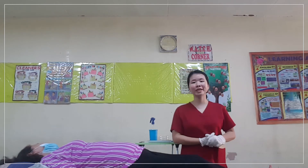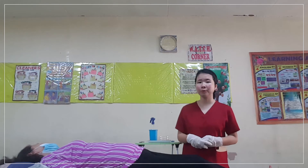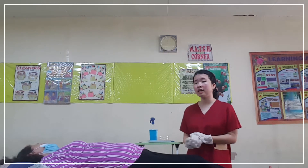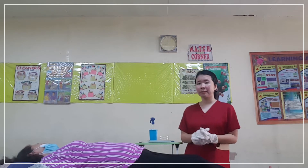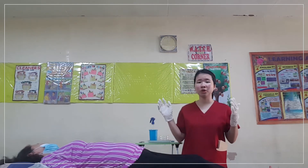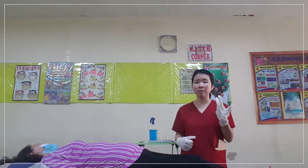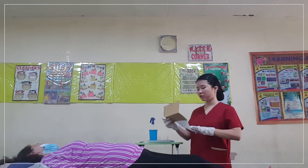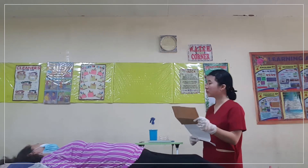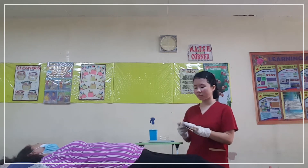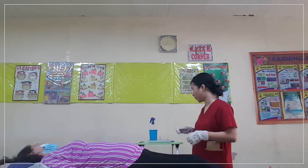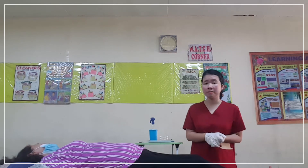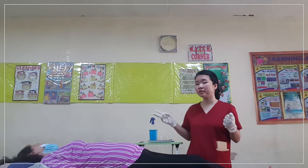We are now going to proceed to procedure number nine, which is to provide privacy for the patient to reduce anxiety and promote safety, security, and dignity of our client. Then we proceed to procedure number ten, which is to verify that you are administering the medication at the proper time, in the prescribed dose, and by the correct route. The medication is to be given at 9 a.m., which is the right time, and we are going to give 500 milligrams of the medicine.